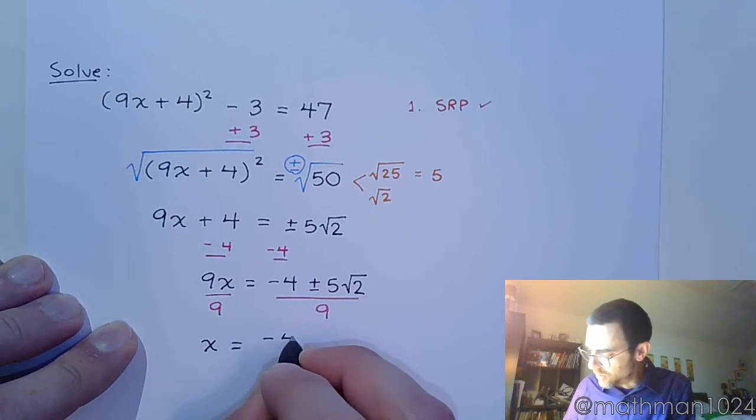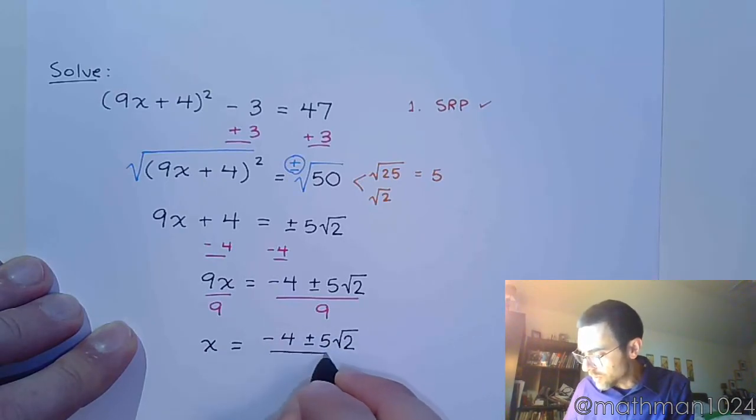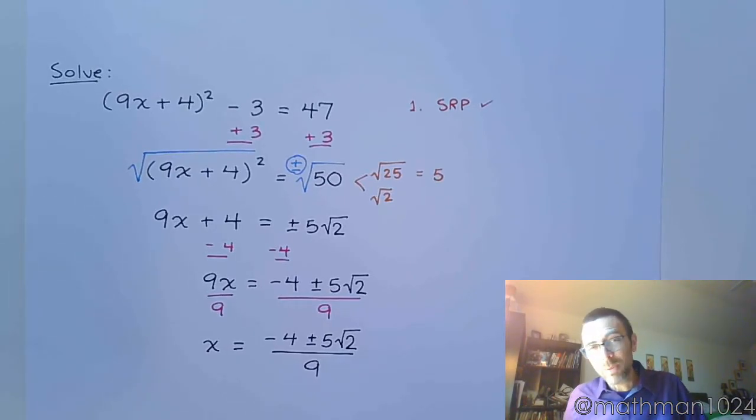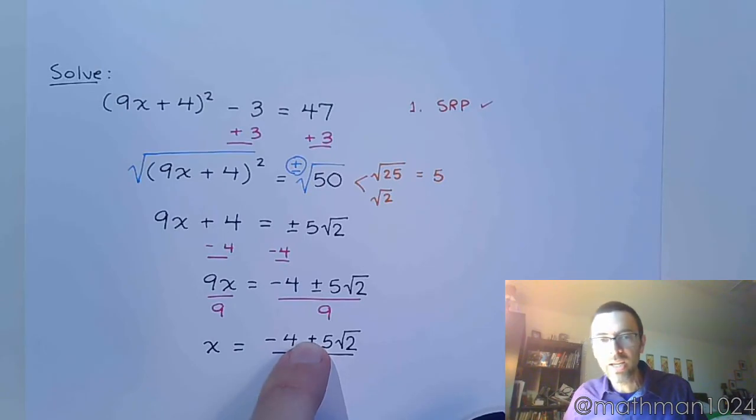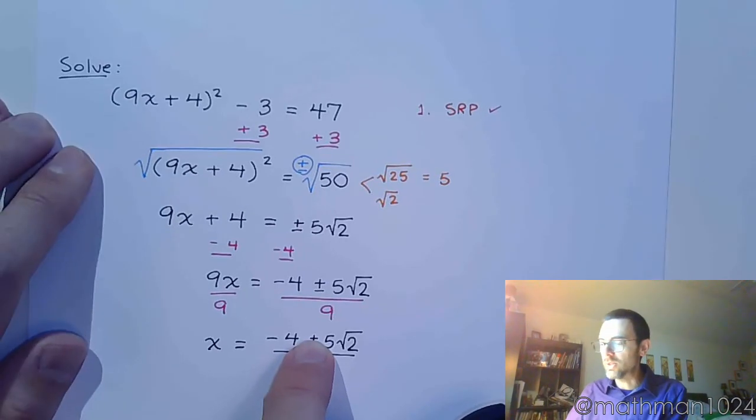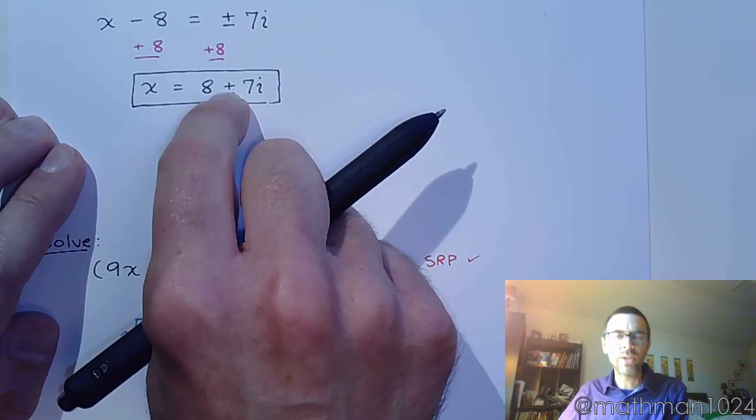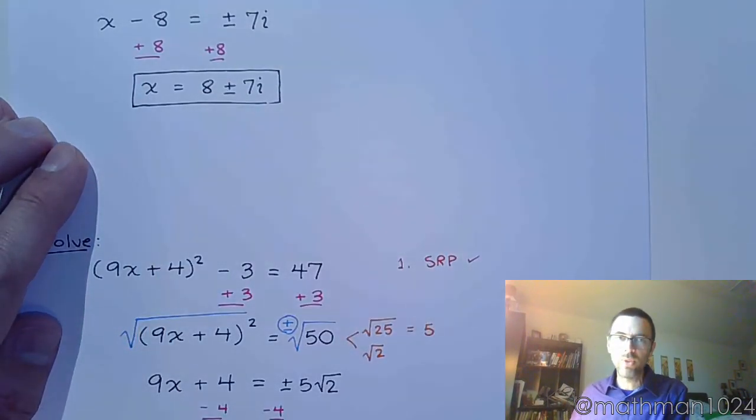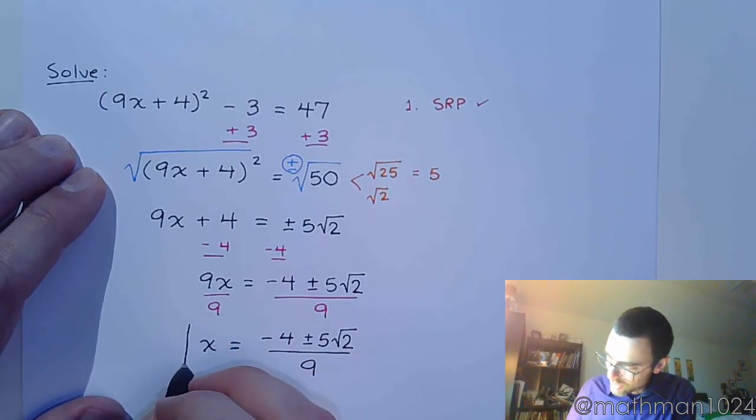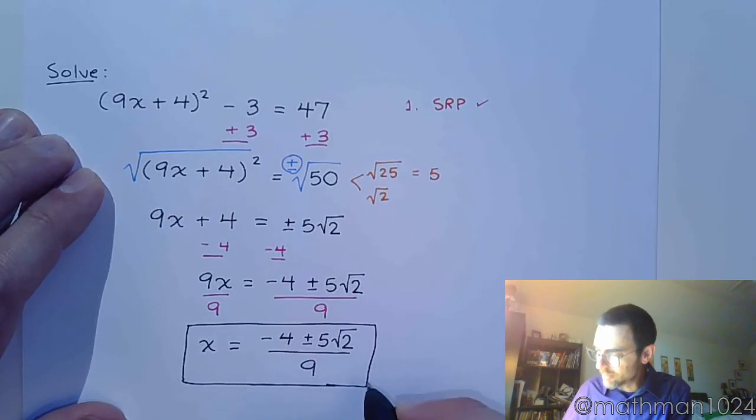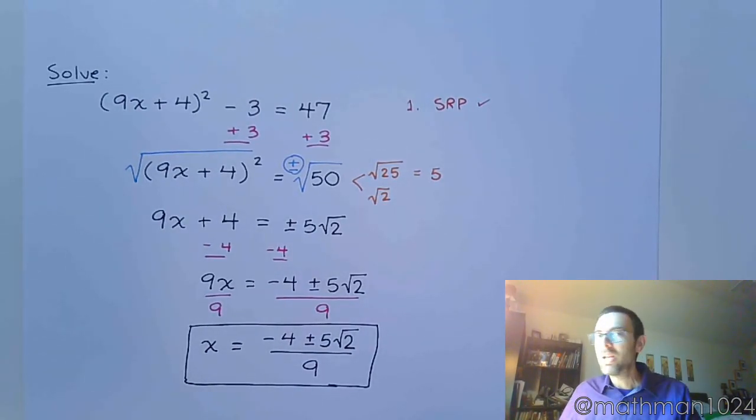So, x is equal to negative 4 plus or minus 5 square root of 2 all over 9. You could try to separate this, but if you've got negative 4 plus 5 square root of 2, those guys can't combine. So, there's no point in doing 1 plus and 1 minus. The same thing is true with the last example. If I have 8 plus 7i, you can't do anything else with that because they're not like terms. And so, this is all that we have. Hope that makes sense. See you for the next section.